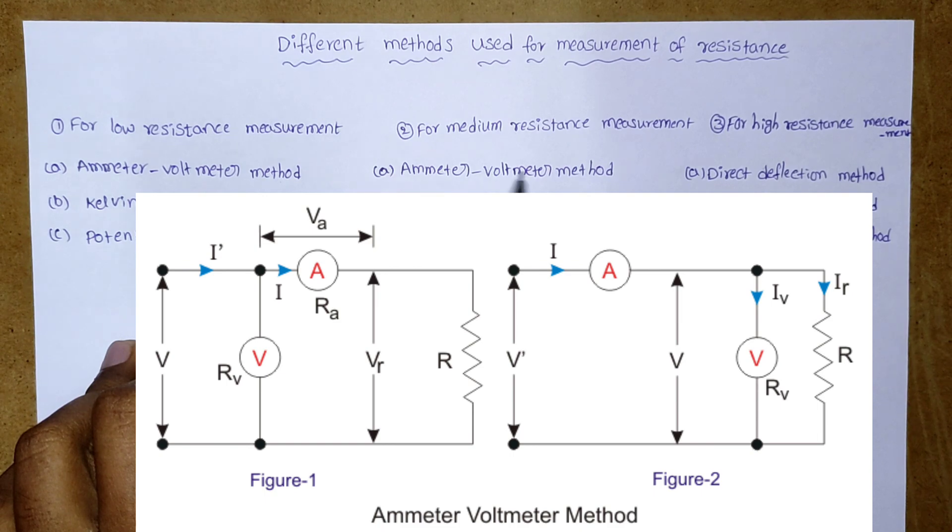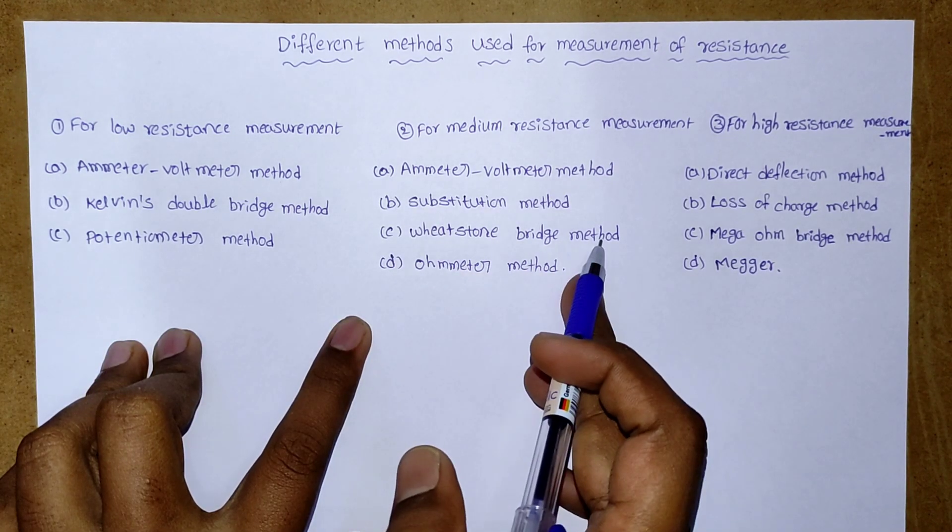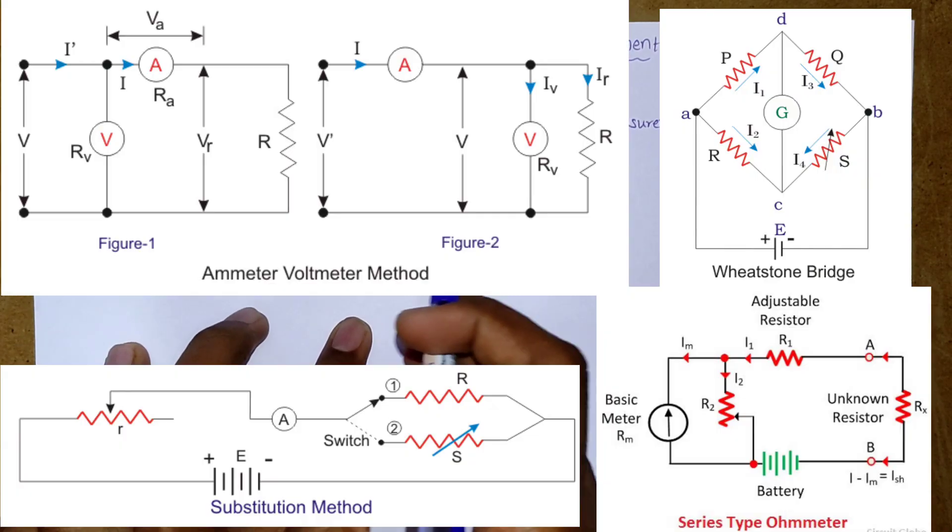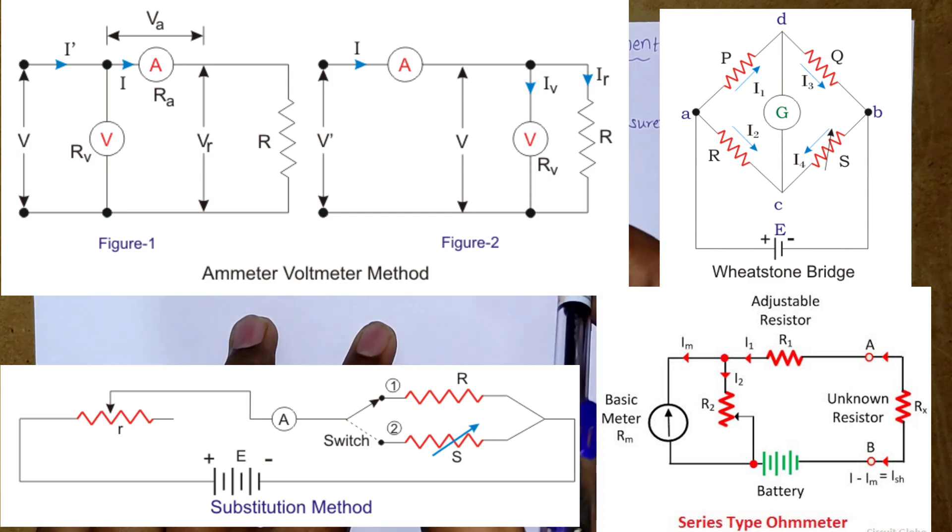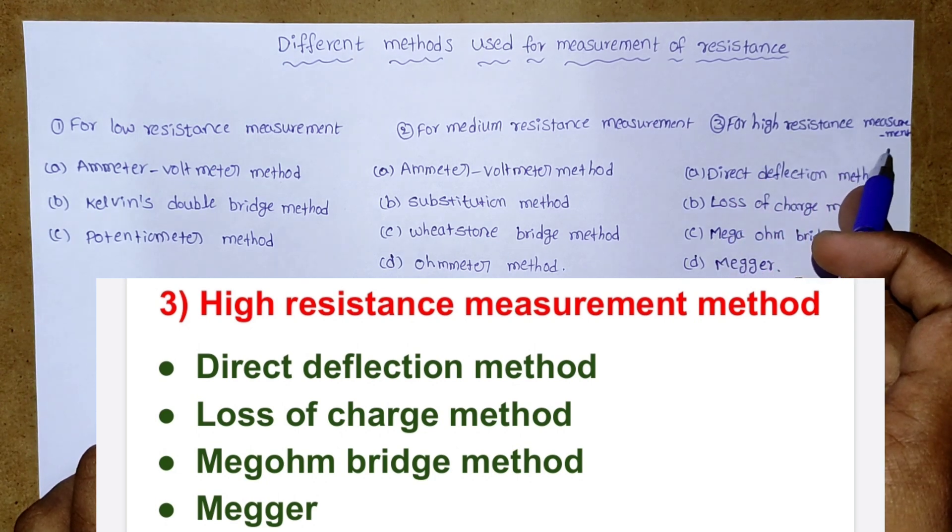first one is ammeter voltmeter method, substitution method, Wheatstone bridge method, and ohmmeter method. These four are available to measure medium resistance. Third one is for high resistance measurement.